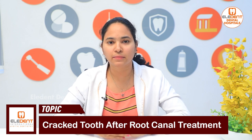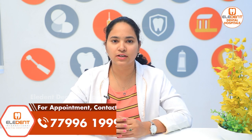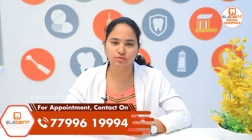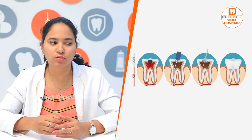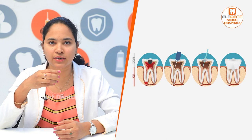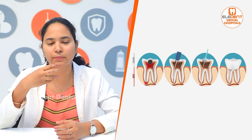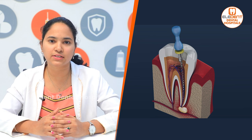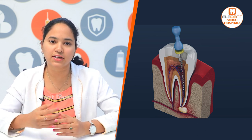Root Canal Treatment — after the procedure, there can be fracture of the tooth, root, or crown. Generally, root canal treatment is done when there are caries and pulp involved, so there is less tooth structure remaining. The crown portion of the tooth will be brittle, and in the root, the nerve and blood vessels will be treated. As a result, the natural resiliency is lost, so there is reduced flexibility in the tooth compared to natural teeth.